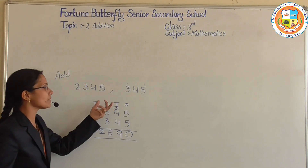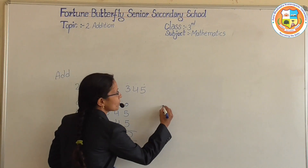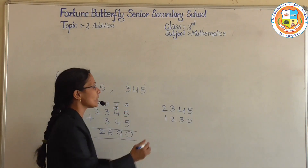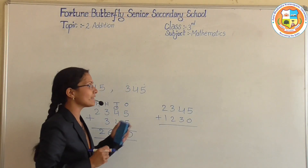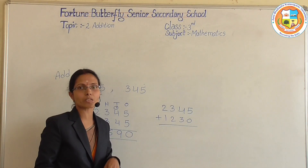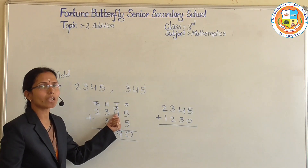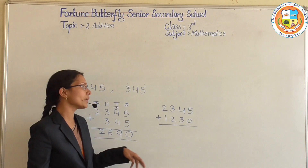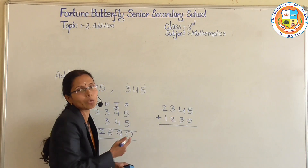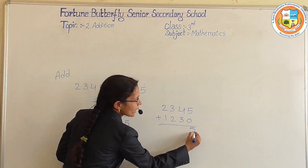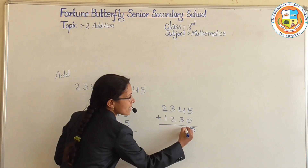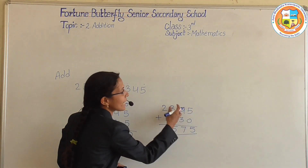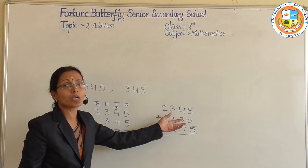If both numbers are the same digit numbers — for example, 2345 and 1230 — you can directly add. There is addition with regrouping and without regrouping. Regrouping means carry. Without regrouping means without carry. Here: 5 plus 0 is 5; 4 plus 3 is 7; 3 plus 2 is 5; 2 plus 1 is 3. So this is without regrouping, and the previous example was with regrouping.